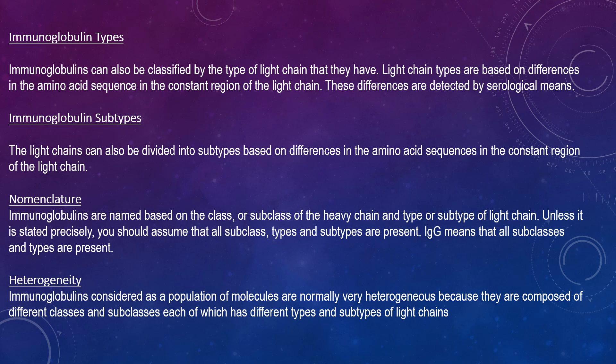The nomenclature is based on the class or subclass of the heavy chain and type of light chain. Unless stated precisely, you should assume that all subclasses, types, and subtypes are present. IgG means that all subclasses and types are present. In regards to heterogeneity, immunoglobulins considered as a population of molecules are normally very heterogeneous because they are composed of different classes and subclasses, each of which has different types and subtypes of light chains. In addition, different immunoglobulin molecules can have different antigen binding properties.